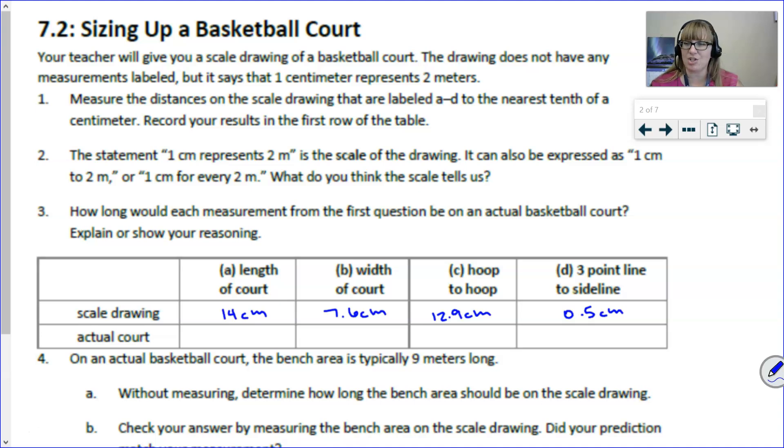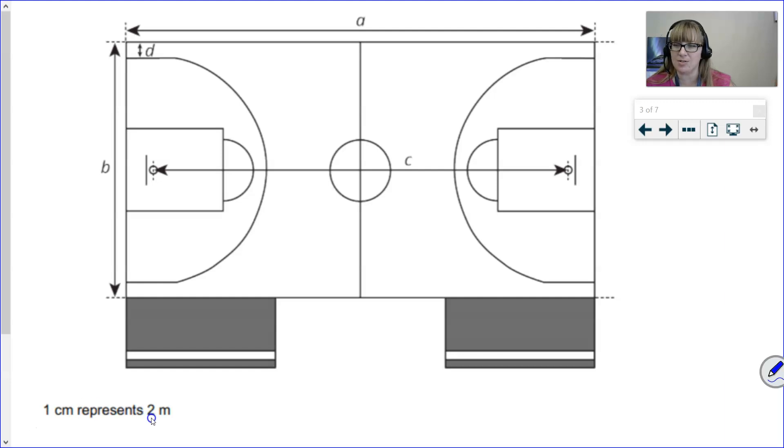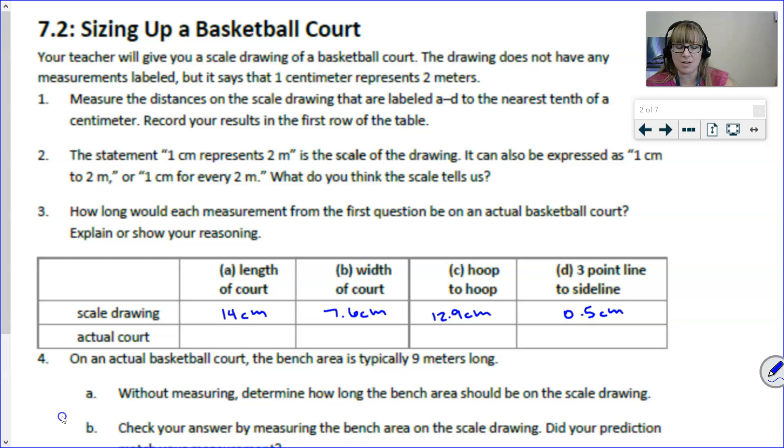Now we have this challenge of figuring out what that means for how big this actual court is. Remember, as it said on our scale drawing, one centimeter represents two meters. And so even though it's not listed, I'm going to go ahead and put that in the table and show one centimeter represents two meters. What does that statement mean? Knowing that this is a scale drawing, what does it mean one centimeter for every two meters?